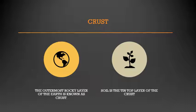What is a crust? The outermost rocky layer of the earth is known as crust — C-R-U-S-T. Soil is the thin top layer of the crust. That is the difference between the crust and the soil.